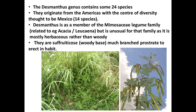The Desmanthus genus contains some 24 species and they originate from the Americas, with a center of diversity thought to be in Mexico where 14 species occur. Desmanthus is a member of the Mimosaceae legume family, so it's related to things like acacias and leucaena, but it's unusual for that family as it's mostly herbaceous species rather than woody ones. They're described as being fruity coasts, meaning they have a woody base but a herbaceous top, and they're usually branched, prostrate to erect in their habit.